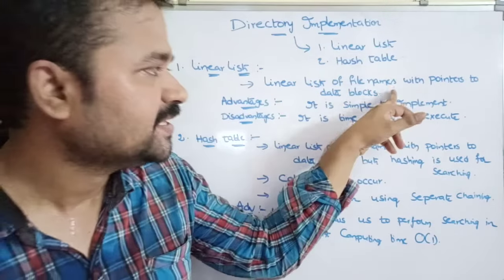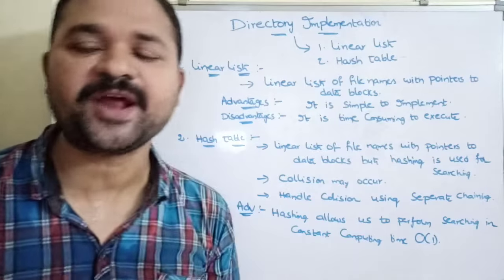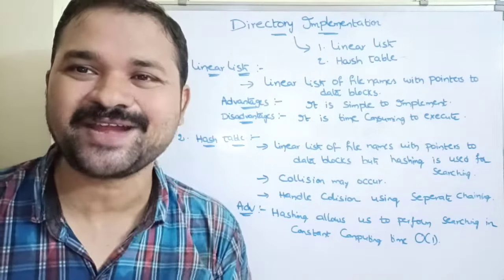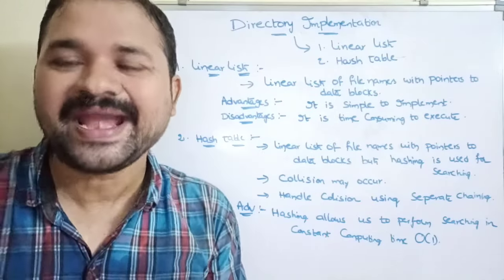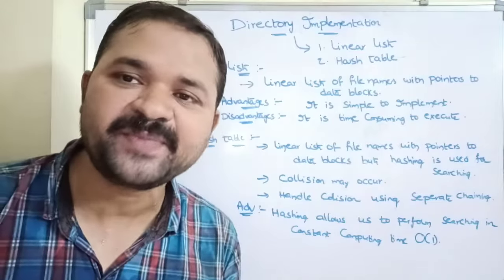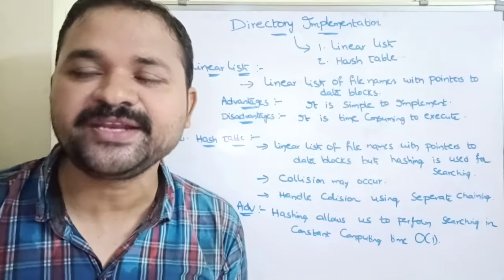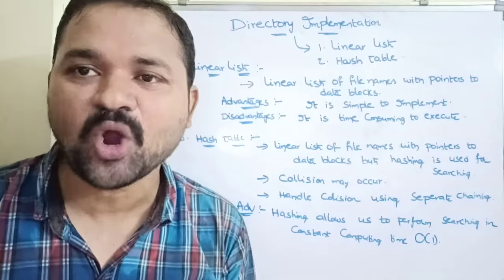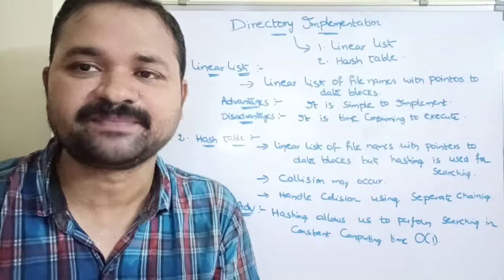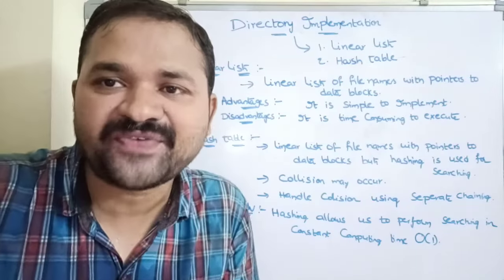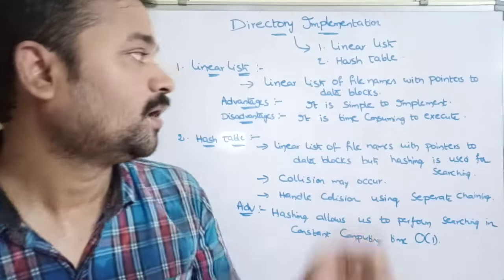In the linear list approach, we maintain a list of file names with pointers to the data blocks. The hard disk is divided into several blocks, and in those blocks the file information is stored. So we can say that files are stored in the data blocks of the hard disk. In a linear list, we maintain a list of file names and those file names point to the corresponding data blocks.